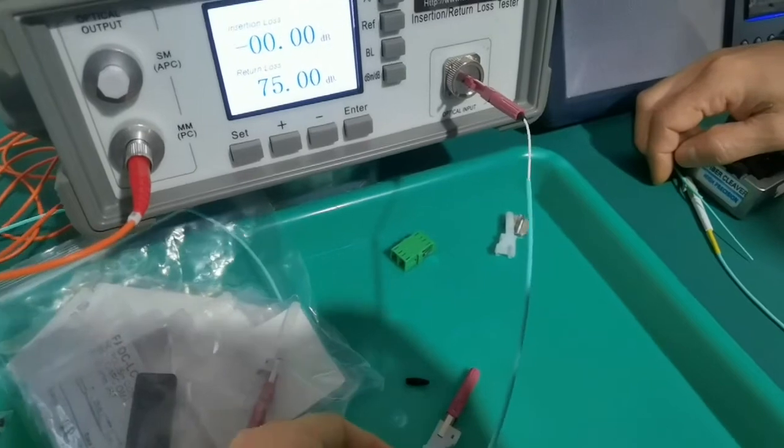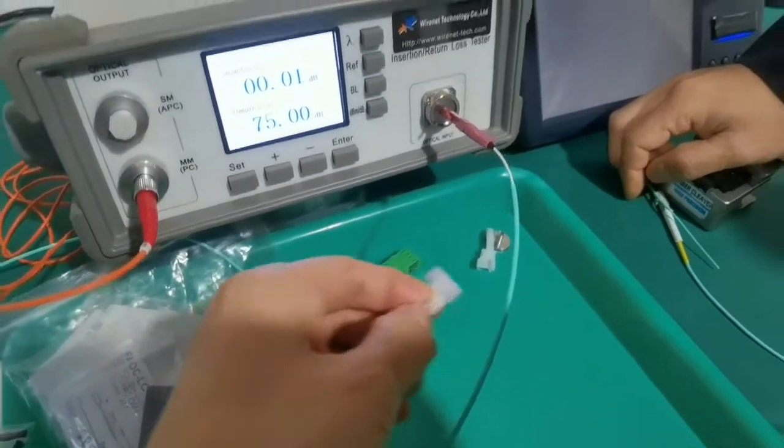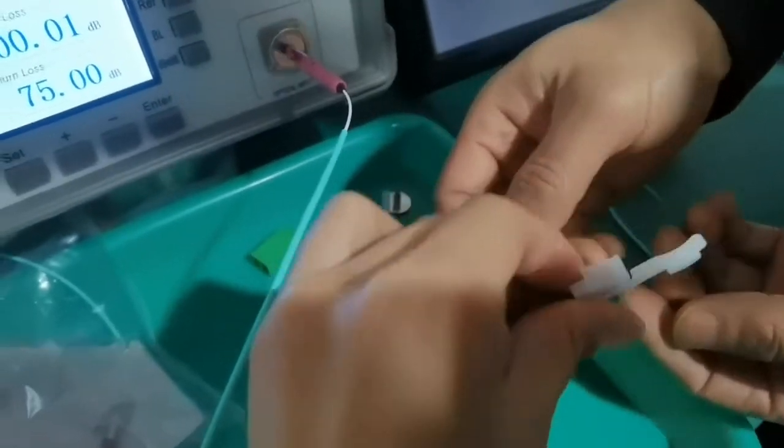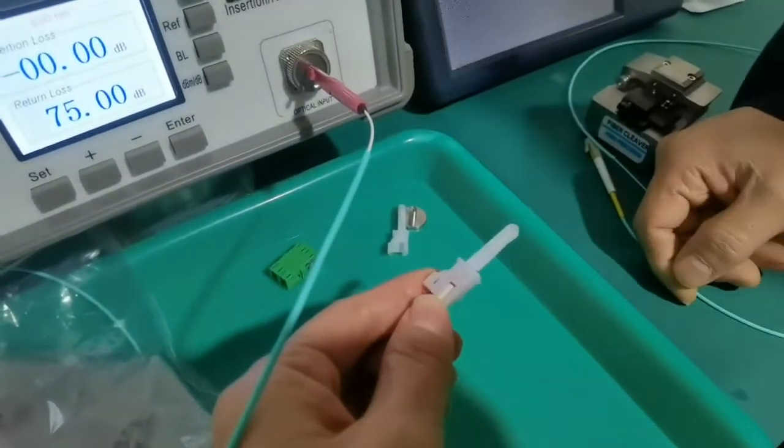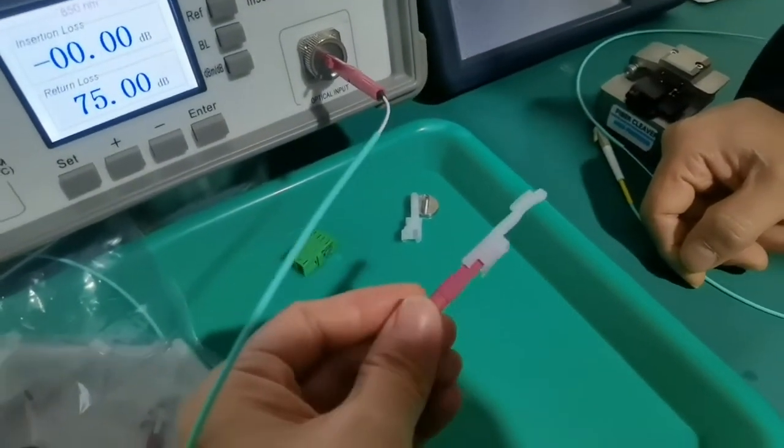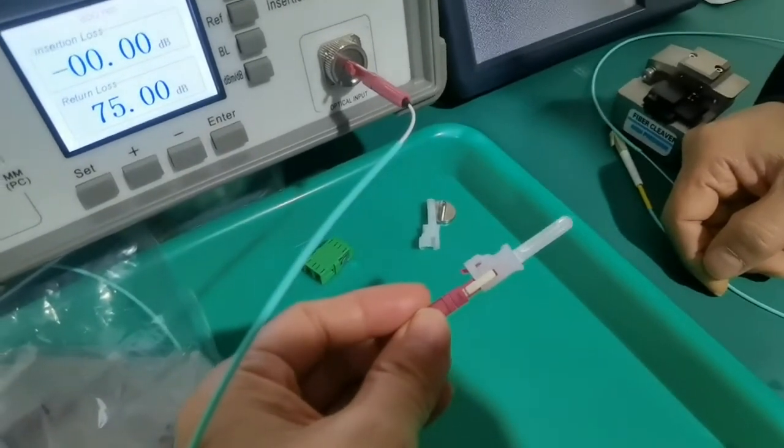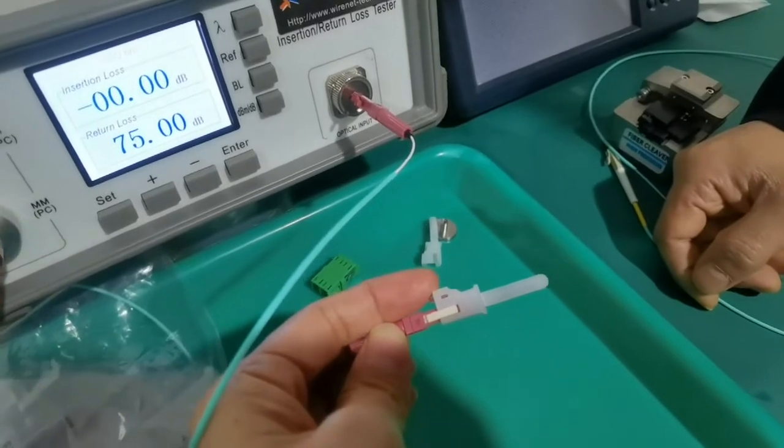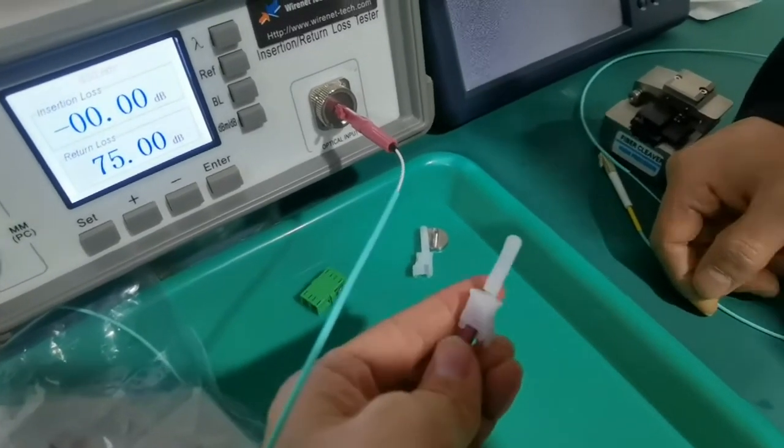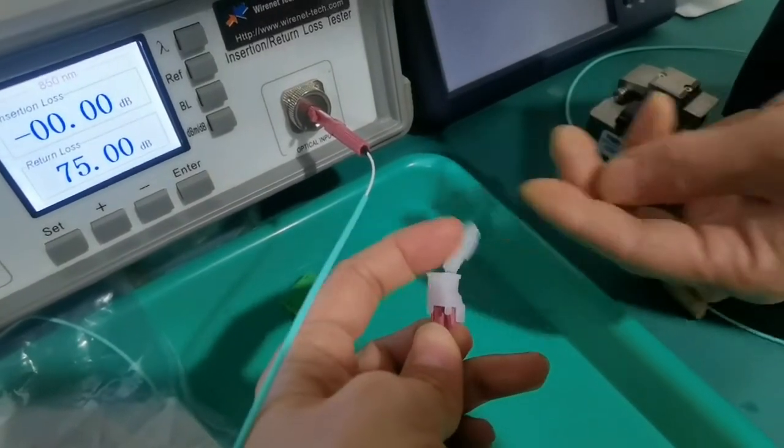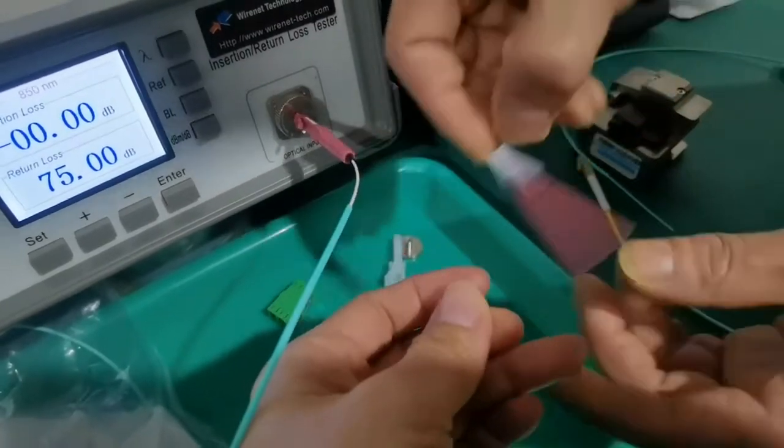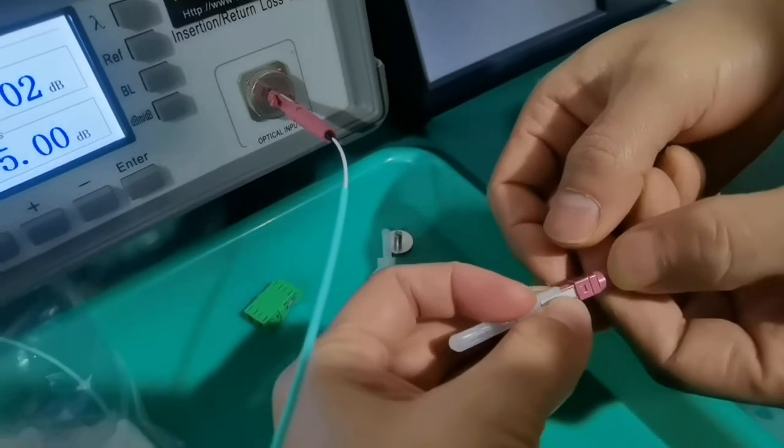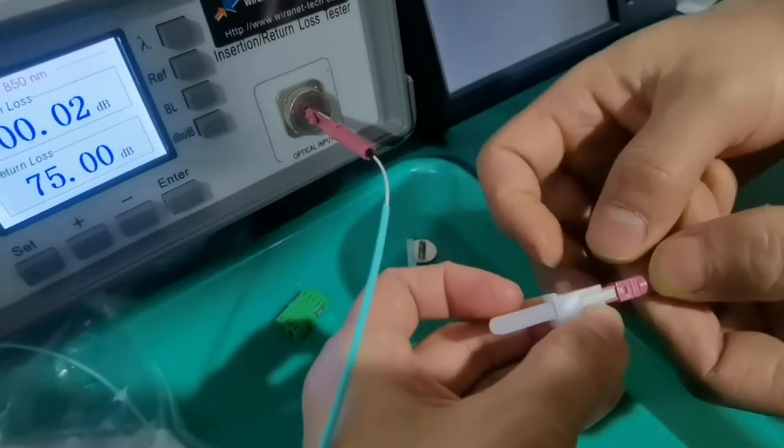Now introduce details of the FASTA connector. The dust cap has a big function. It can be used as protection of the ferrule to protect from dust. Inside is a V-groove to have fiber inside.